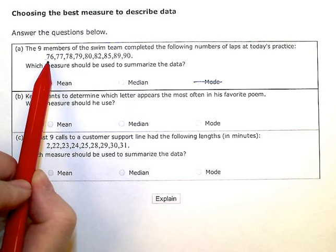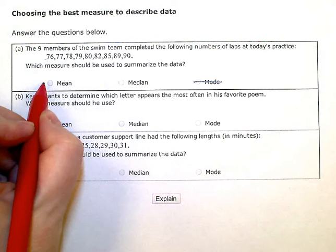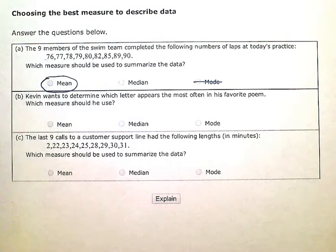I have nine numbers within 14 laps of each other, so I would say that this would be a good data set to measure using the mean as our measure of center.